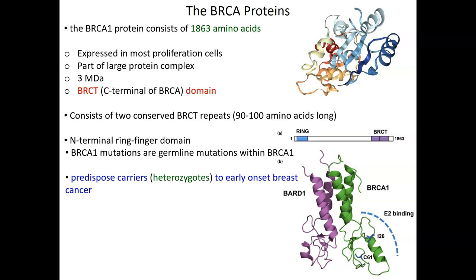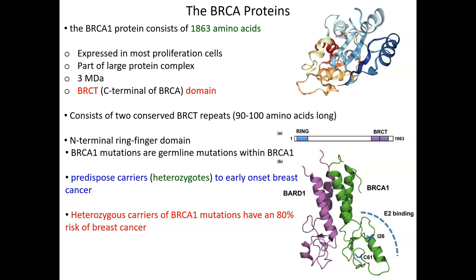Being heterozygous for a BRCA1 mutation gives a predisposition for cancer and has a higher likelihood of developing cancer, which also translates to an earlier onset in life because we all accumulate mutations over time. To put numbers on it: individuals who are carriers for a BRCA1 mutation have an 80% increased risk of breast cancer. This is why, a number of years ago, Angelina Jolie elected to have a double mastectomy — although she had no cancers — because her BRCA1 and BRCA2 heterozygosity placed her cancer risk in the mid-90%, meaning she would very likely develop breast and/or ovarian cancer if she lived long enough.